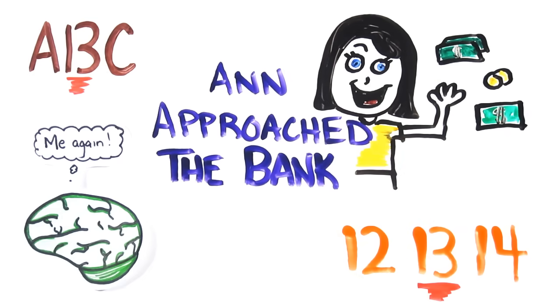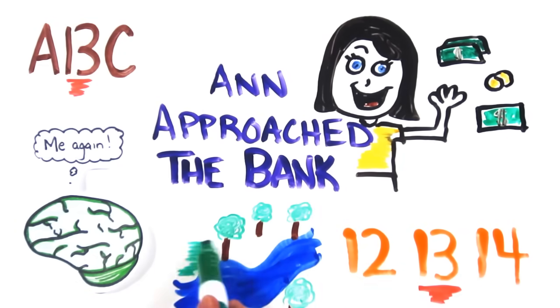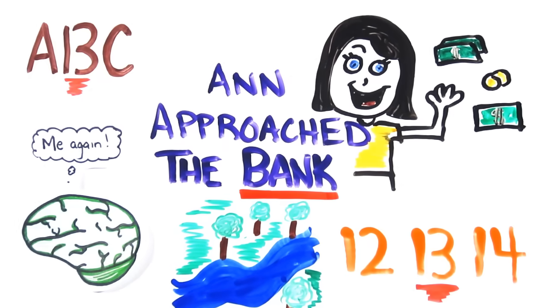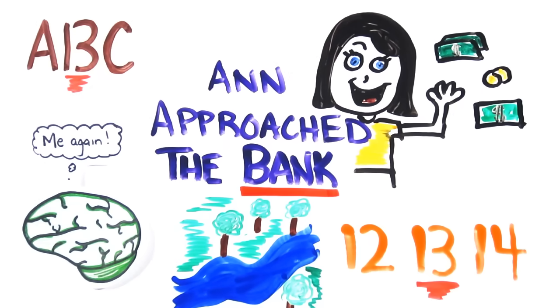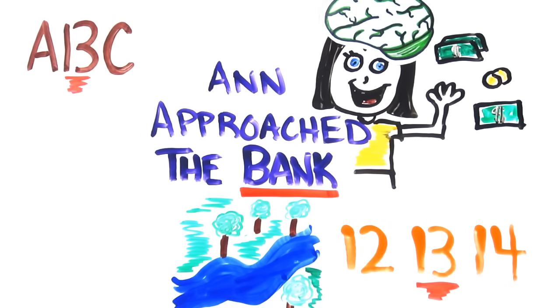But if the sentence before this was 'they were floating gently down the river,' the entire scene would have changed because bank is no longer associated with money. Without an explicit context, System 1 quickly generates one based on previous experience. In this case, you've likely visited more banks than rivers, and so the context is resolved accordingly.